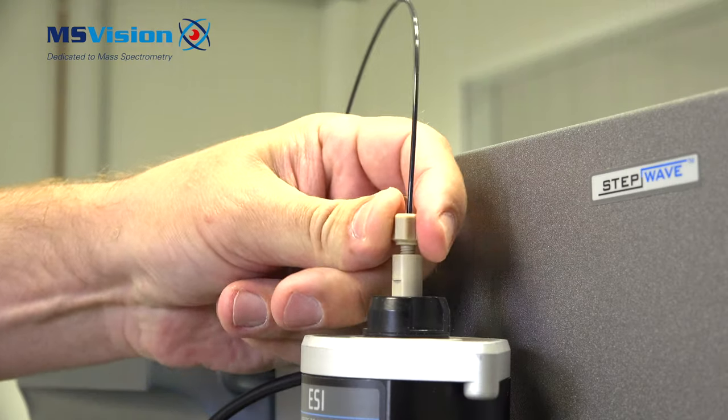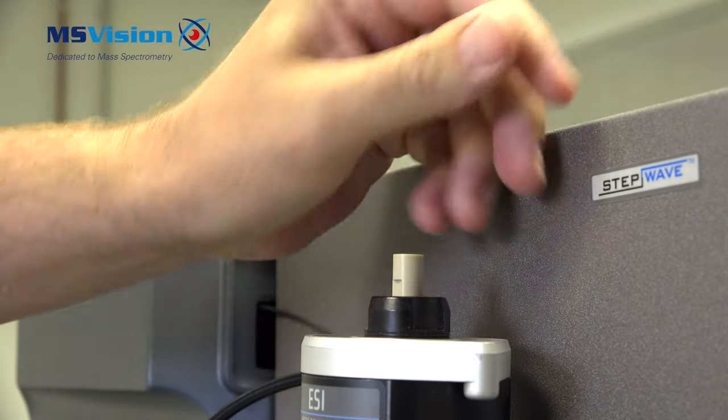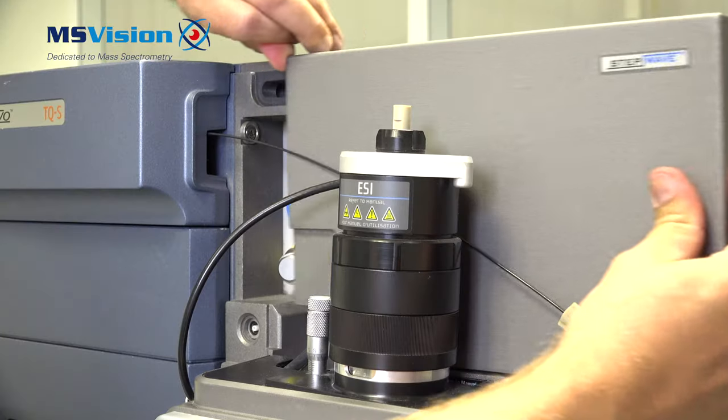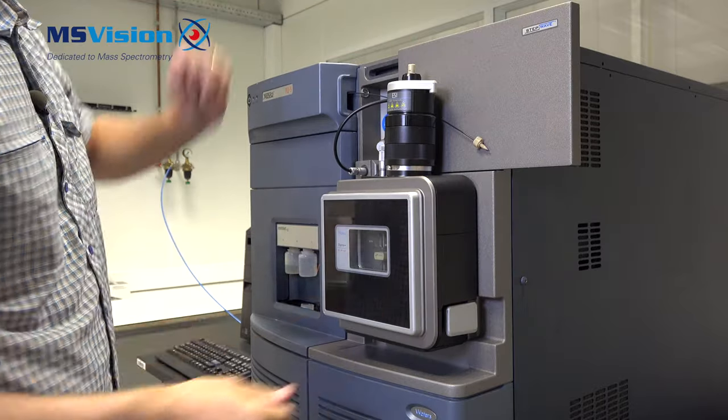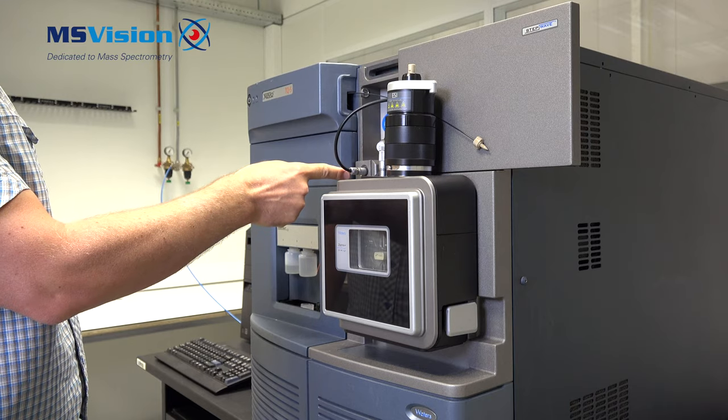First disconnect the inlet connection which is on top of the probe. Then slide open the door and behind here there's a large fissure connector and a small fissure connector for the capillary voltage.